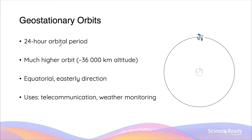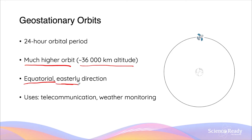Besides a 24-hour orbital period, geostationary satellites also have a much higher orbit — roughly 36,000 kilometres in altitude. Geostationary orbits are also equatorial, meaning the satellite is directly above the equator of the Earth. And because Earth rotates on its own axis in an easterly direction, satellites in these orbits must also travel in the easterly direction to maintain the stationary property of these orbits.